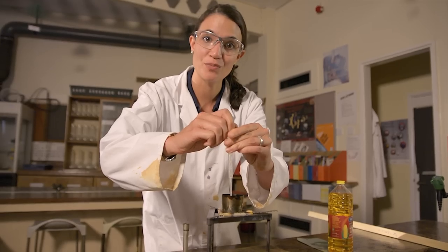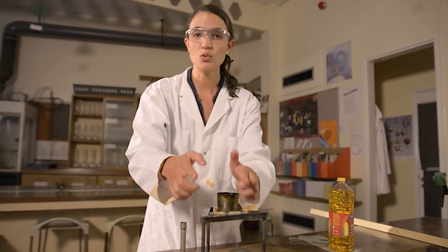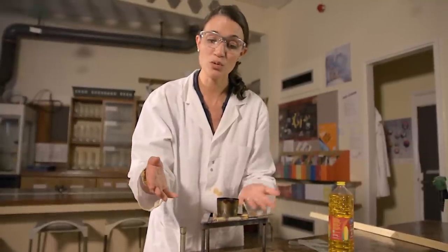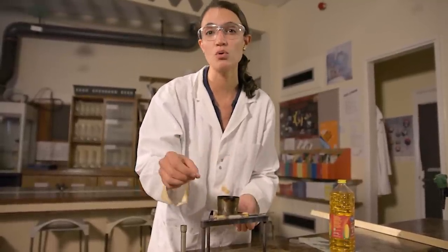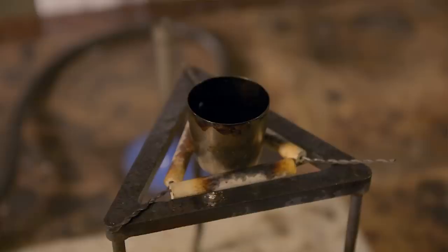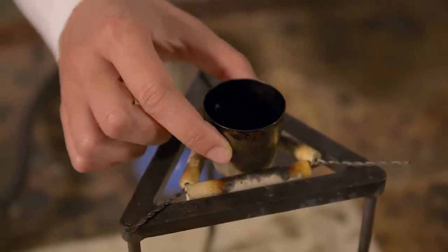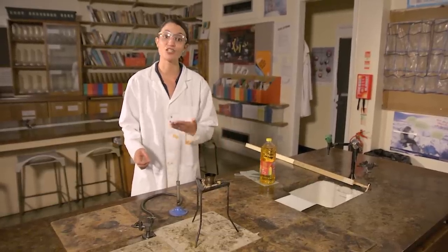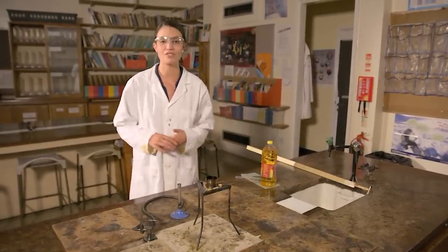The choice of crucible is really important. You want to find one with tall straight sides because we don't want hot fat spitting everywhere. We're also using a nickel crucible because porcelain can crack under these conditions. You need to make sure the crucible is well wedged into that clay triangle. You need to surround the apparatus with safety screens and ensure that students are set back a safe distance.